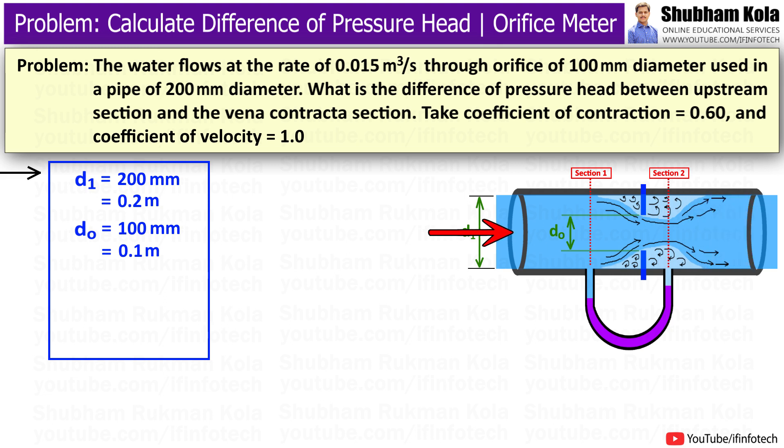The water is flowing from left to right and the flow rate of water, i.e. discharge, is given as 0.015 m³ per second. The value of coefficient of contraction Cc is 0.60 and the coefficient of velocity Cv is 1.0.